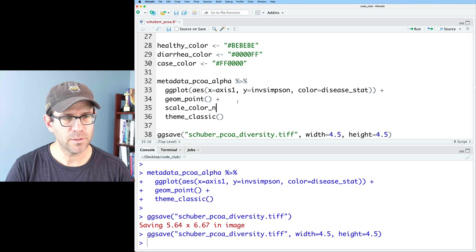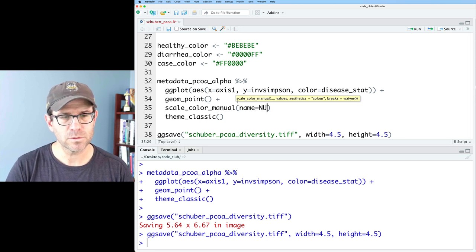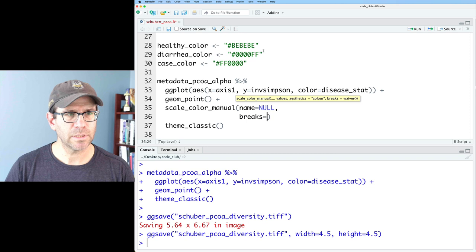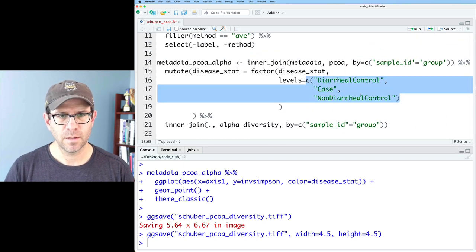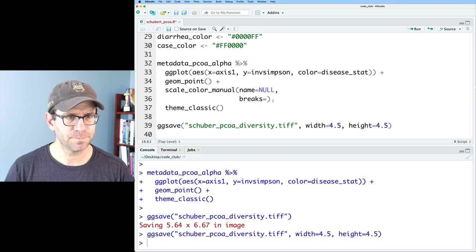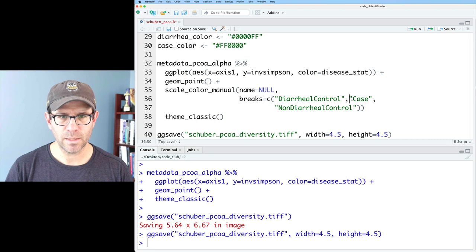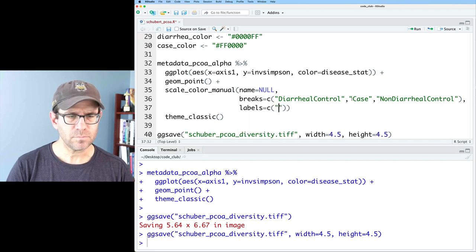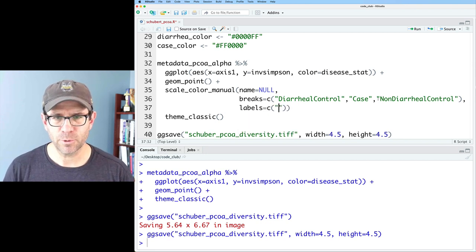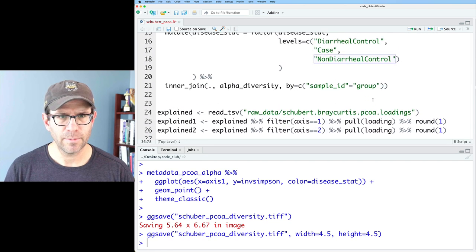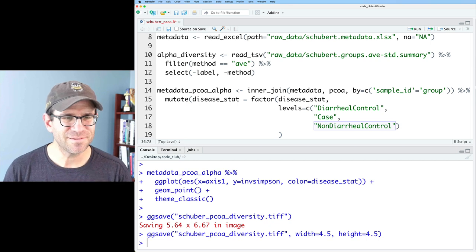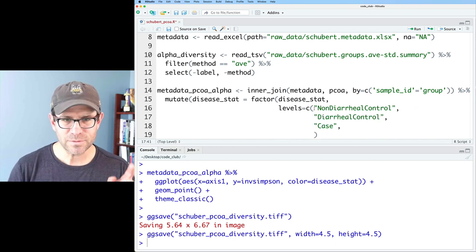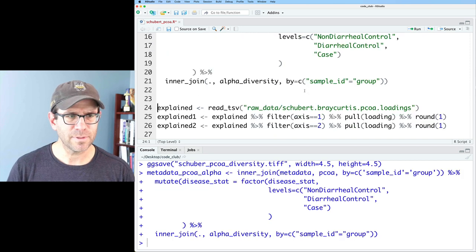So I'd like to get my color scheme in here. I will do scale color manual and name equals null. And then I will do breaks equals, and that's going to be these things here, diarrheal control case, non-diarrheal control. And let me get this all on one line. And we can then do labels. Looking at my levels here, these don't look right. I think I want these non-diarrheal controls to be first diarrheal control and then case.